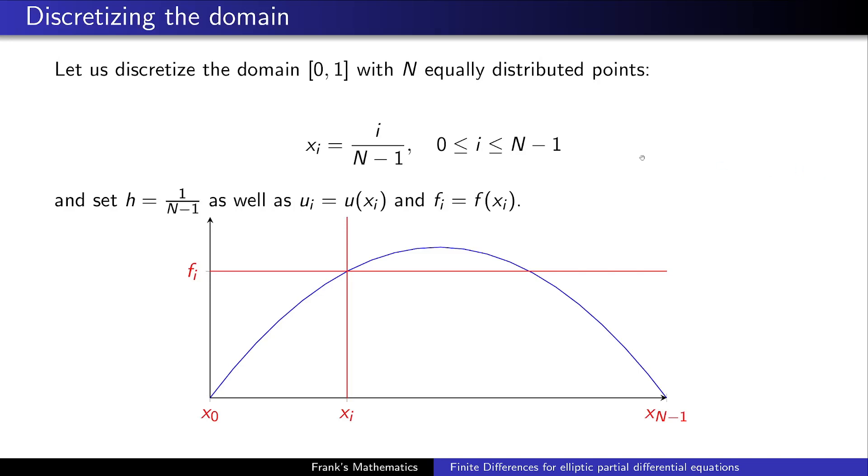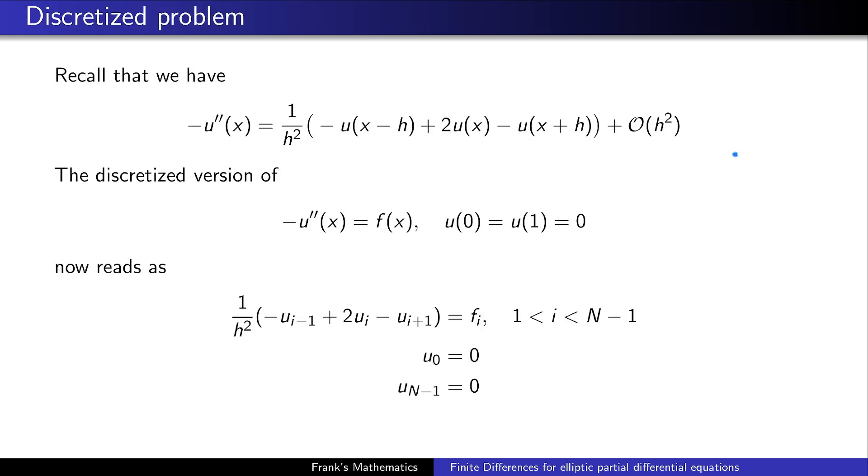Next we are discretizing the domain because at the end of the day if we want to compute something we have to make it discrete. Let's split the domain into n equally distributed points and call them x_i. Every point x_i has a distance h to its immediate neighbor. In addition we also introduce the following abbreviation. We want to call u_i as u evaluated at the point x_i and f_i is the evaluation of f at the point x_i. What we're going to do now is use these approximations for the second derivative to obtain a discretized version of our Poisson equation.